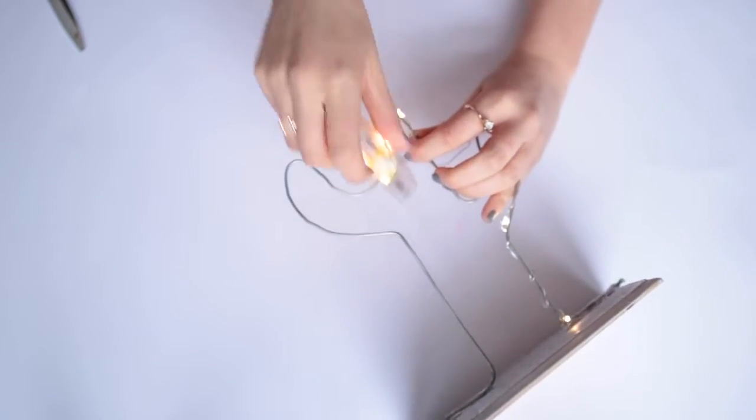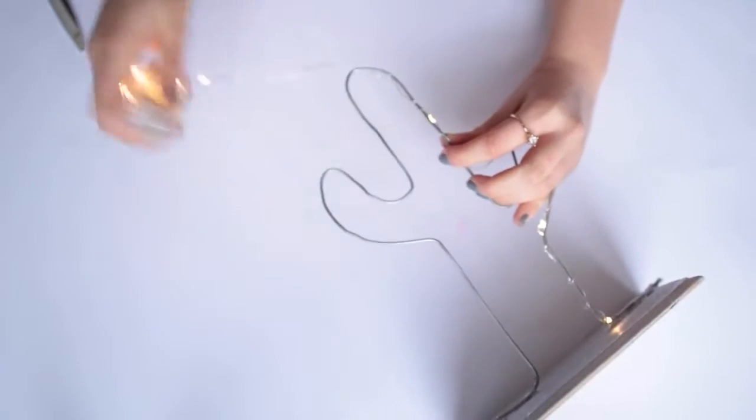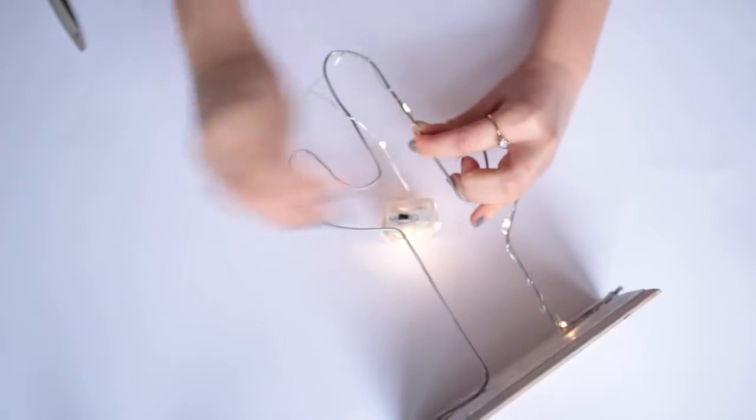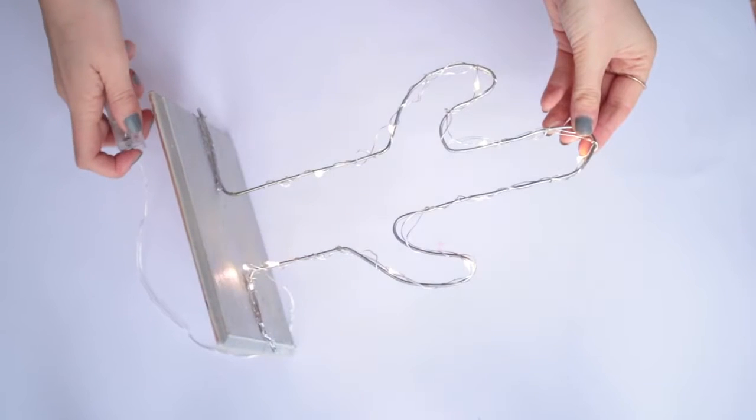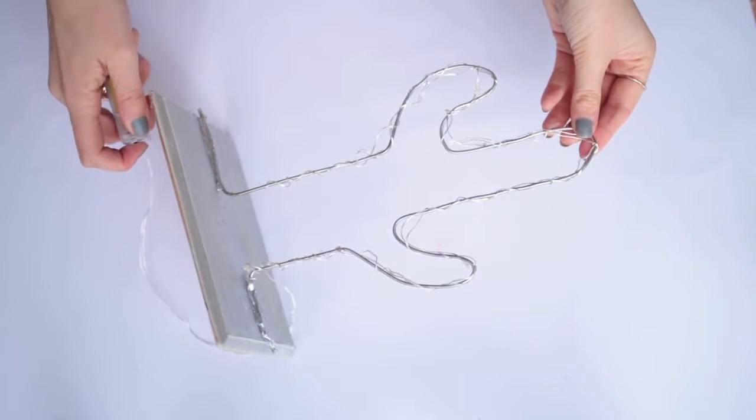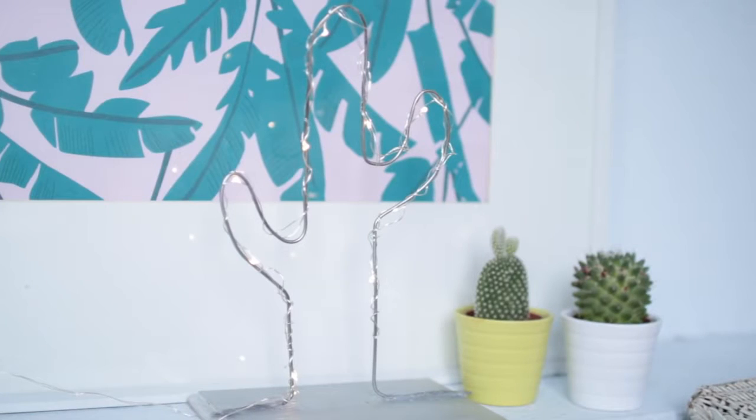I'm using battery operated firefly lights and I actually wrapped the wire around the battery pack which made it so much easier to weave in and out of the shape. And then you're done. It's as simple as that and I think it's really effective. Like I said, you can make any kind of shape you'd like.